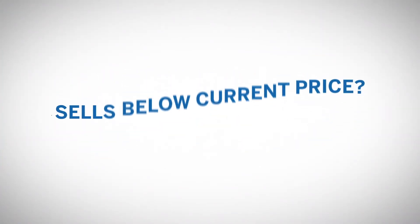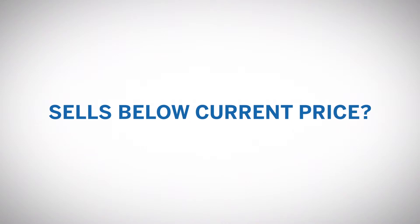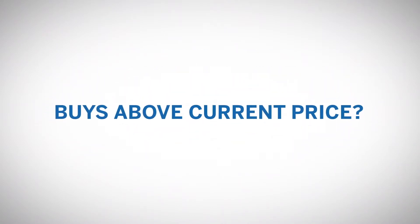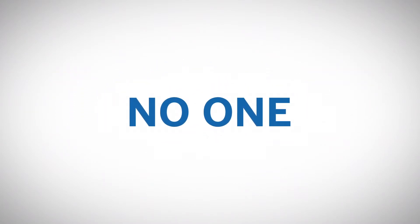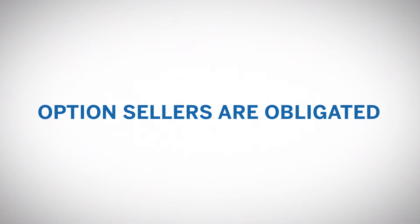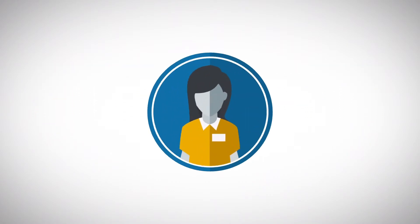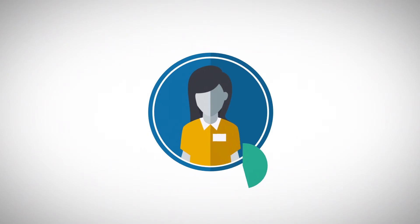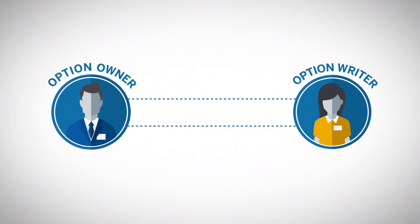But who would want to sell something at a price that is lower than the current market price? Or who would want to buy something at a price that is higher than the current market price? No one. However, sellers of call options are obligated to sell you that future at a specific price. They were paid a premium to take on the risk of having to sell something at a lower price than the current market. Writers of put options are obligated to buy that future at a specific price that is higher than the current market price.